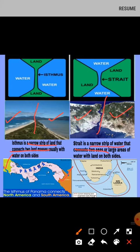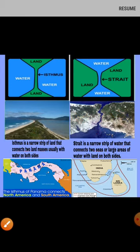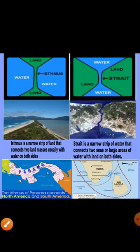So here you can see the difference: an isthmus has water on both sides whereas a strait has land on both sides. An isthmus is a narrow strip of land, whereas a strait is a narrow strip of water that connects two seas. The Palk Strait is one example, connecting India and Sri Lanka.